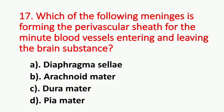Question number 17. Which of the following meninges is forming the perivascular sheath for the minute blood vessels entering and leaving the brain substance? Option A: Diaphragma sellae. Option B: Arachnoid mater. Option C: Dura mater. Option D: Pia mater. The answer is Option D, Pia mater.